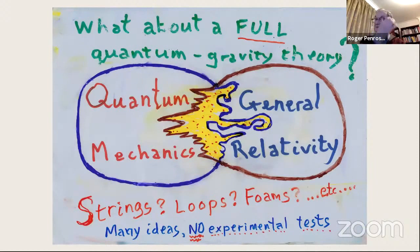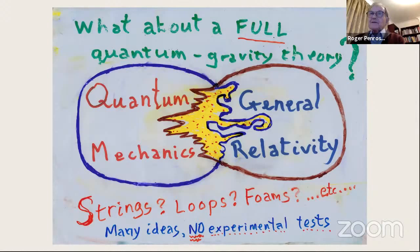Let's consider what happens with a full theory combining both. There are all sorts of approaches — string theory perhaps being the most familiar, loop variables, foams, and various other ideas. I should point out that these are all very far from experimental tests. Whatever you think of these particular approaches, they're certainly not at a stage where you could test them experimentally. I want to talk about things more directly to do with observation.